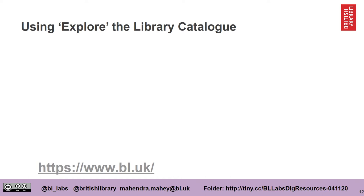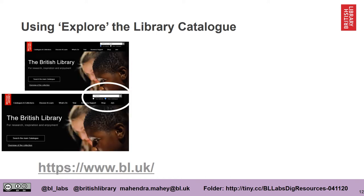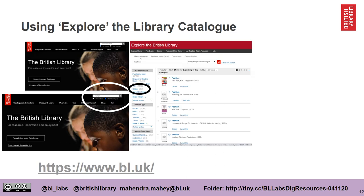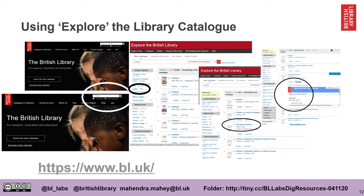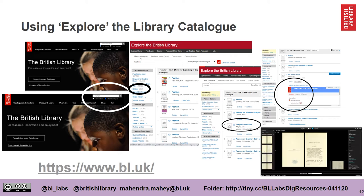You can start your journey looking for our collections via the British Library's main site using the explore function. Here I've switched to the main catalogue and typed the word fashion. As you can see on the left-hand side there are different access options — I'm going to choose online. Here I found a book called The Perils of Fashion which is available digitally. I'm now going to click on the button 'I want this' and then go to digital content, collection item, go. Here we can see the digitised book called Perils of Fashion.